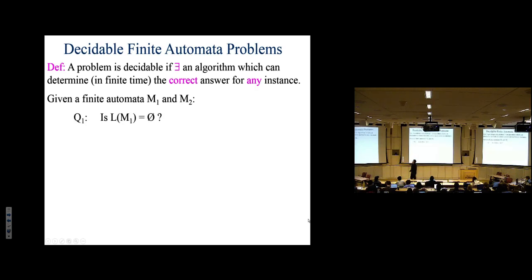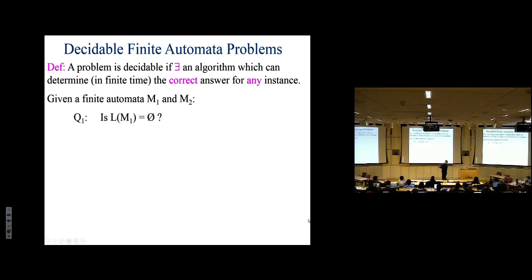Algorithm one: given a finite automaton M1, is its language empty — does it accept any string whatsoever? I hand you a finite automaton described as a five-tuple — states, transition function, alphabet, start state, final states — and ask: is its language empty or not? You return a single bit: yes or no.